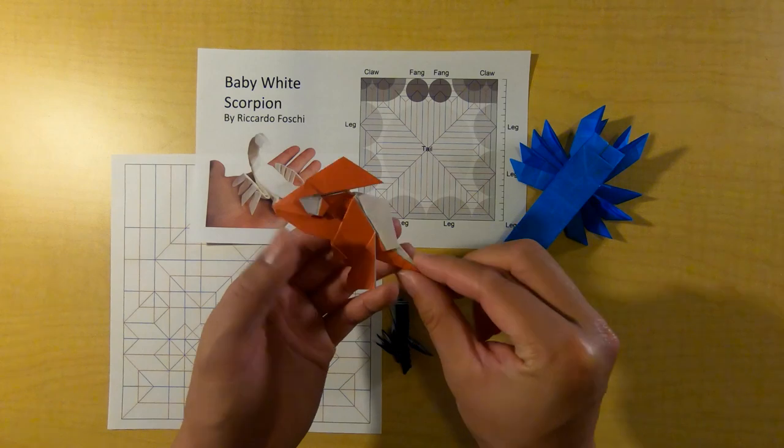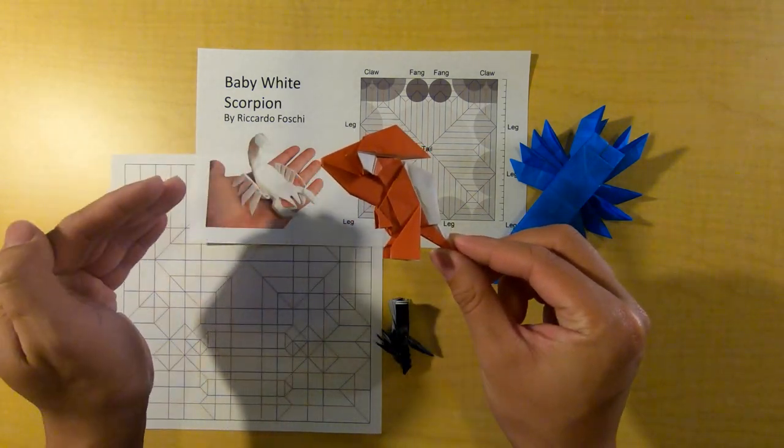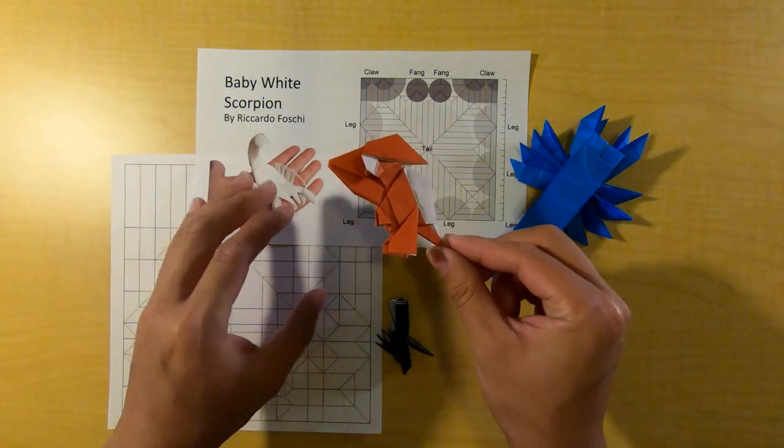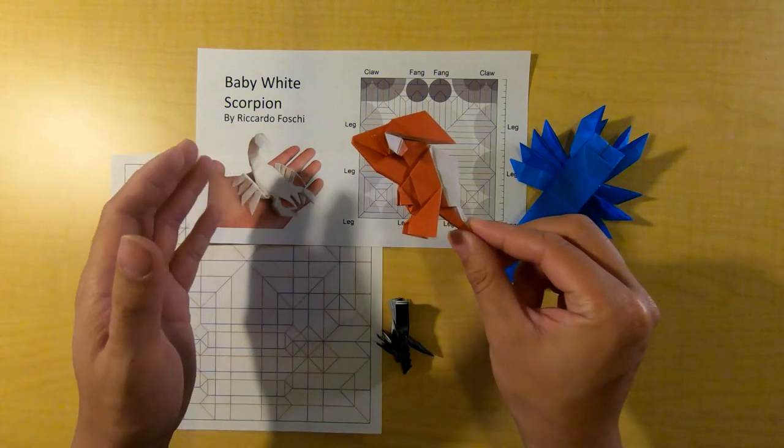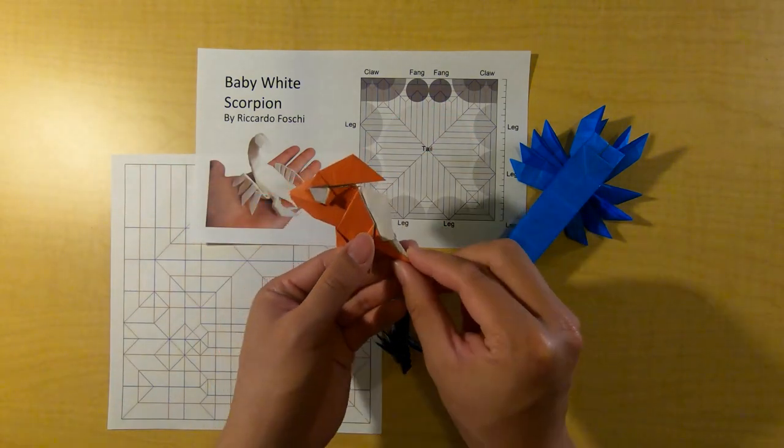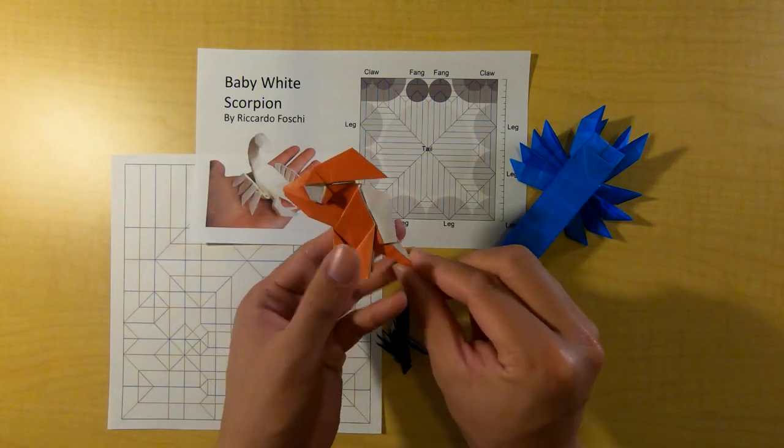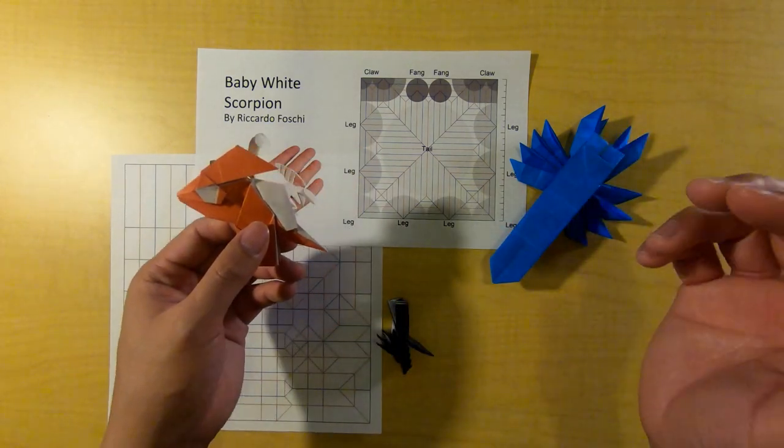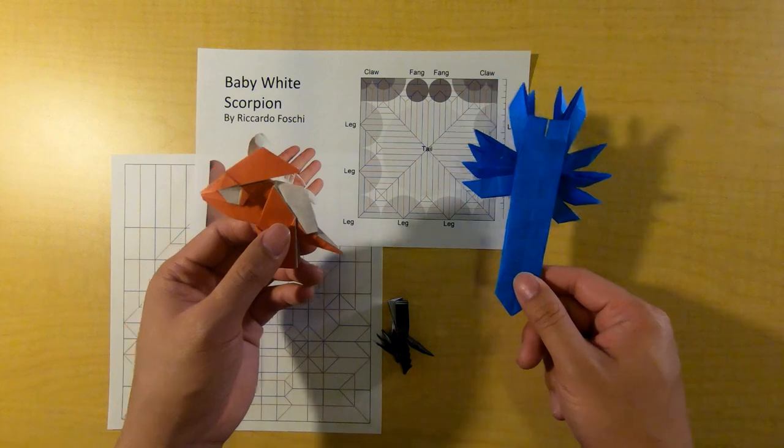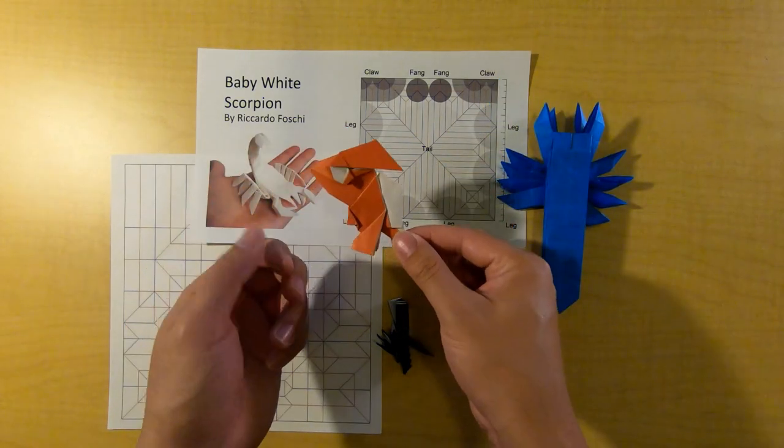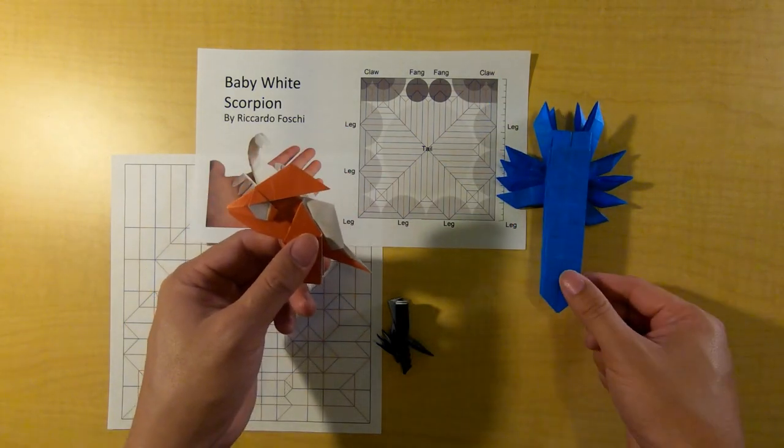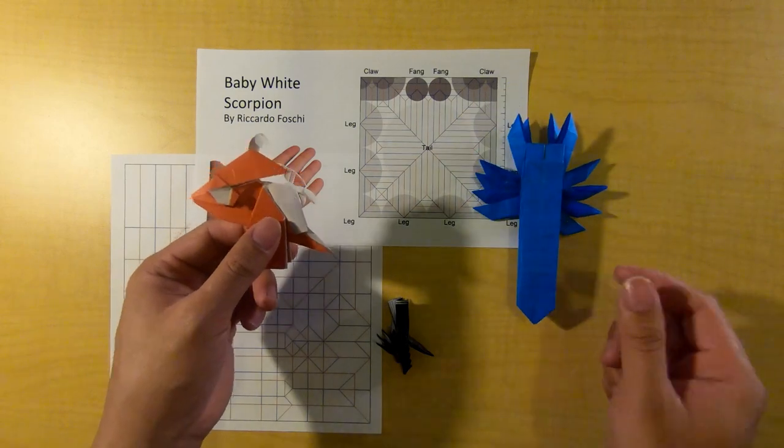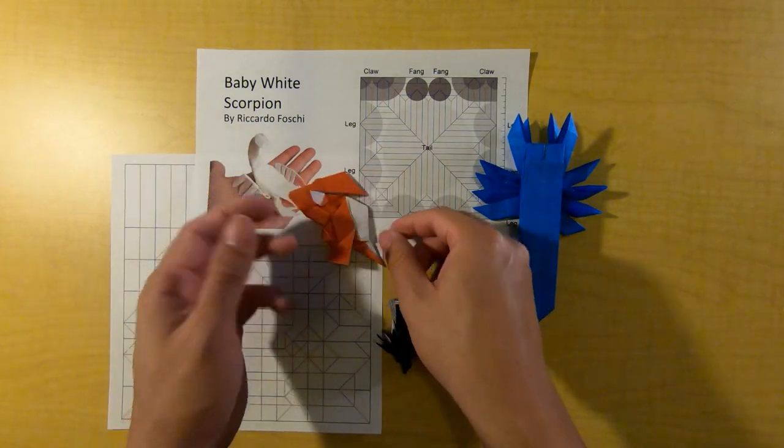And what's also really exciting about this model is we'll also be using it for the shaping class. So the next class, class four and class five, will kind of intertwine because I won't show how to shape this model in that class. I'll just show how to collapse it. And then in class five we'll have box pleating shaping, 22.5 degree shaping, and then some more advanced box pleating shaping.